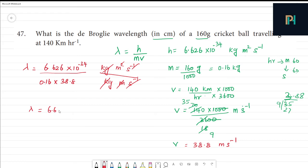Lambda is equal to 1.06 into 10 to the power minus 34 unit meter.